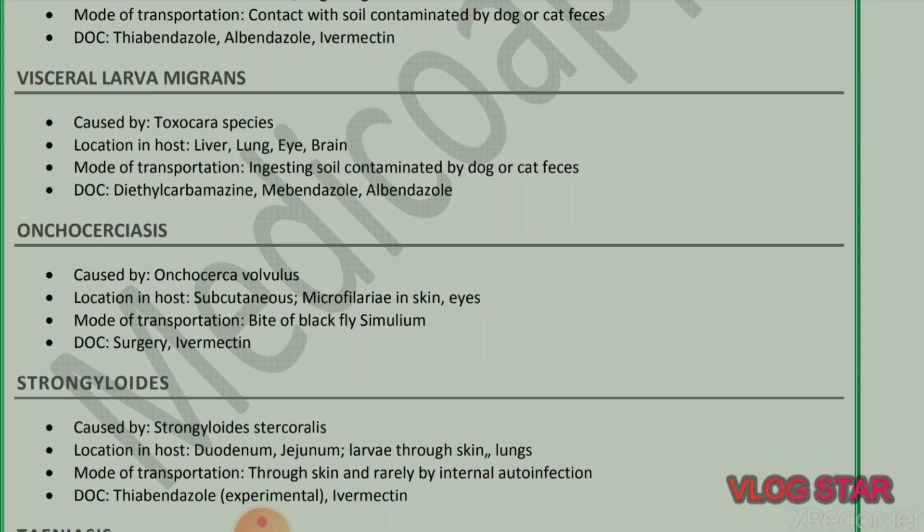Next parasite: Onchocerciasis, caused by Onchocerca volvulus. Location in host: subcutaneous tissue; microfilariae in skin and eyes. Mode of transmission: bite of black fly (Simulium). Drug of choice: surgery and ivermectin.